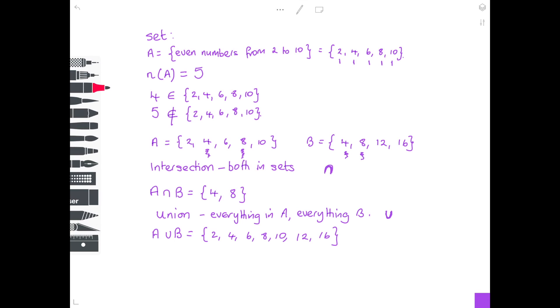So if you look at this A ∪ B, there's {2, 4, 6, 8, 10}, which are the numbers in set A, and there's also {4, 8, 12, 16}, which are the numbers in B. So everything in both A and B are listed there as {2, 4, 6, 8, 10, 12, 16}.